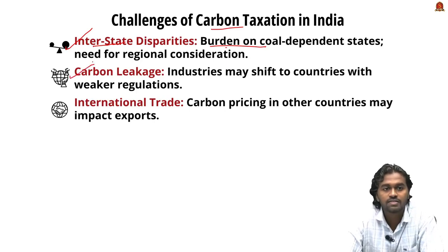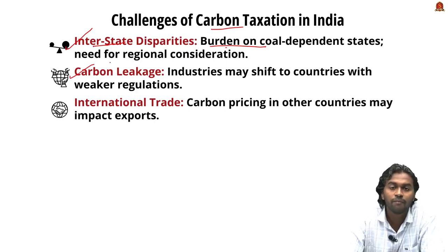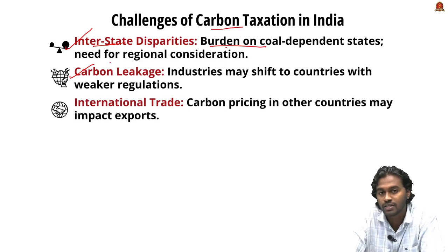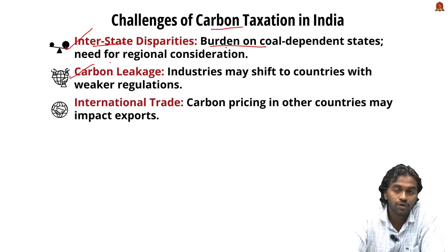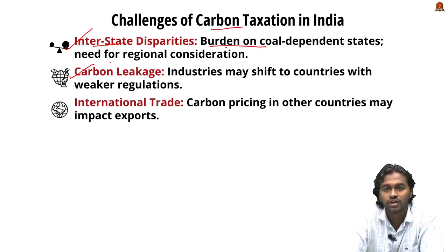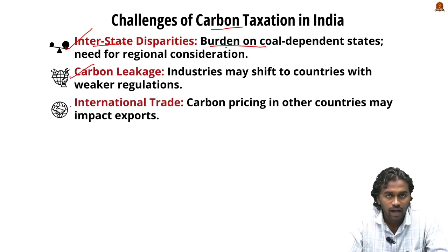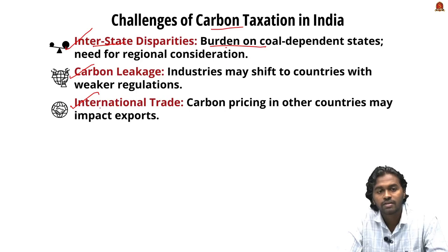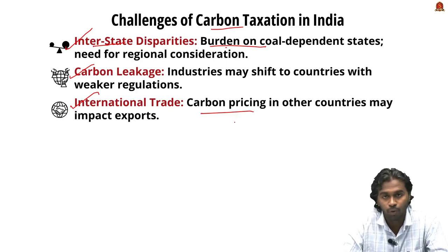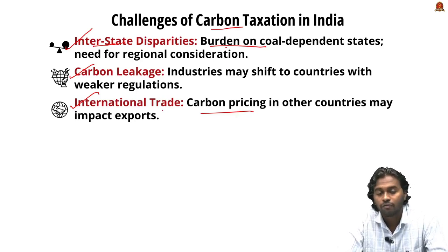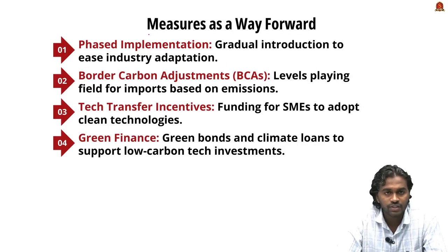Carbon leakage is a key concern — if strict carbon regulations are imposed in India, industries may shift production to regions like Africa or Latin America. Additionally, if other countries impose heavy carbon taxes, it can impact India's exports. These are significant challenges in managing carbon tax policy effectively.